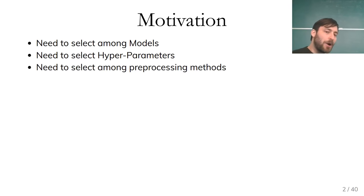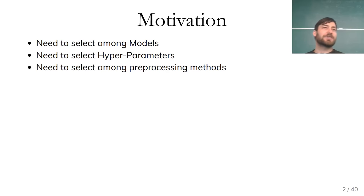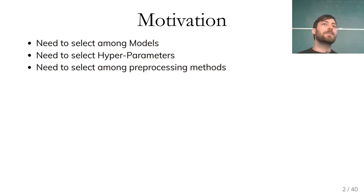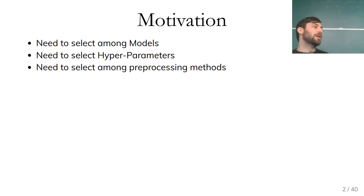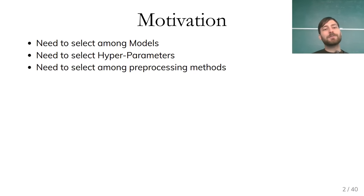I'll phrase this as a problem of hyperparameter selection, thinking of all of these choices as hyperparameters of the method. As you saw in GridSearchCV, you can search over parameters but also over steps in the pipeline — whether to use a neural network or an SVM is just another hyperparameter, as is which imputation method to use, whether to scale, or whether to do one-hot encoding. So now we have a really big hyperparameter space, and we want to search over all possible machine learning pipelines to pick the best one.